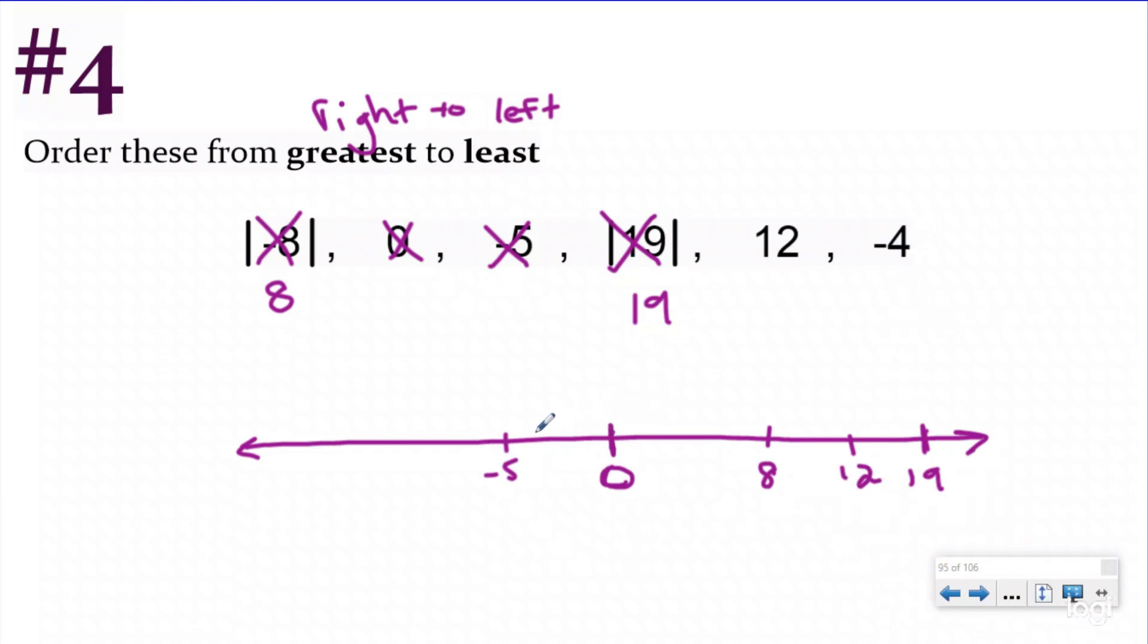So negative one, two, three, four, and that would be right before negative five. So I want to go from greatest to least. So my furthest one to the right was 19.